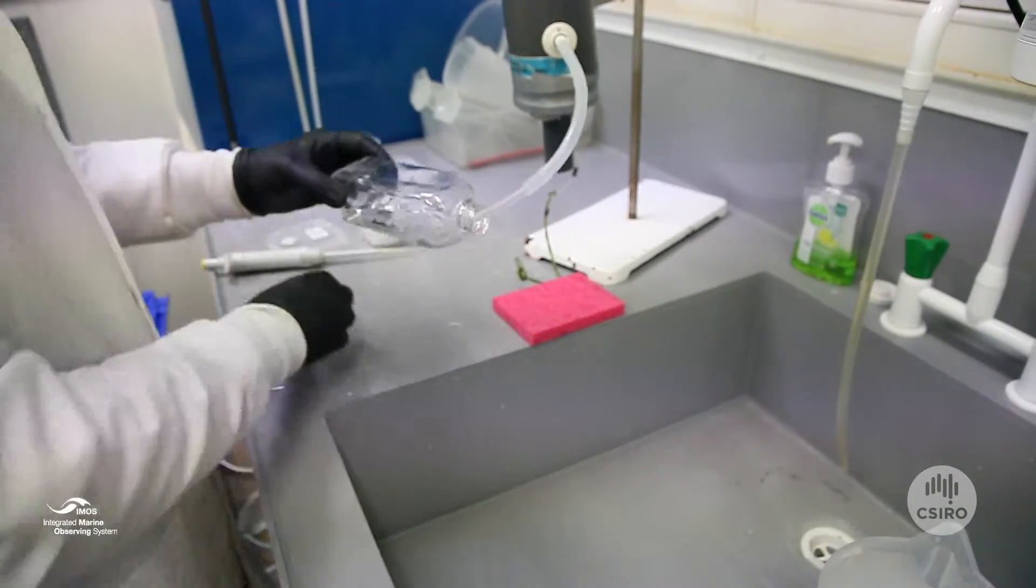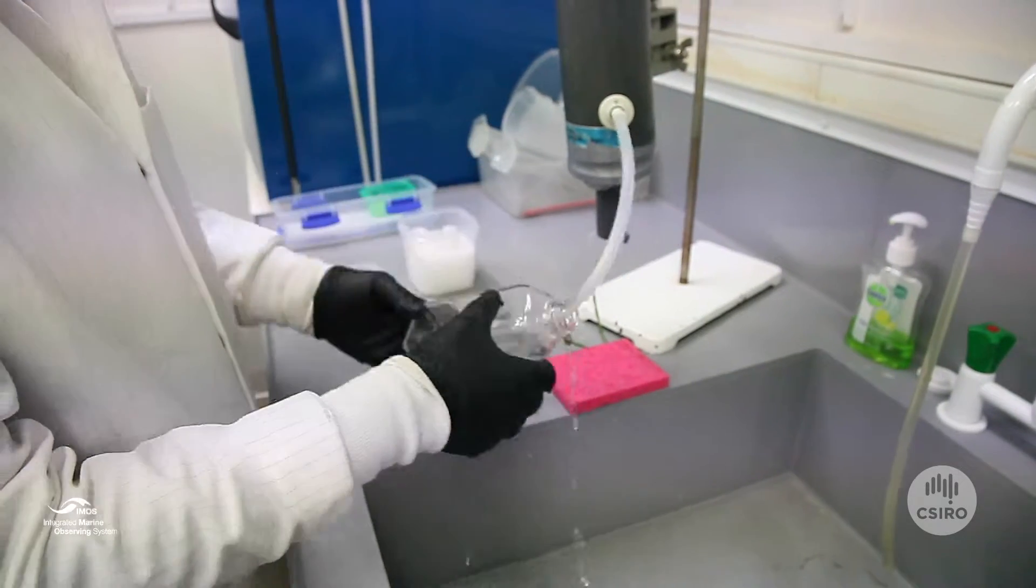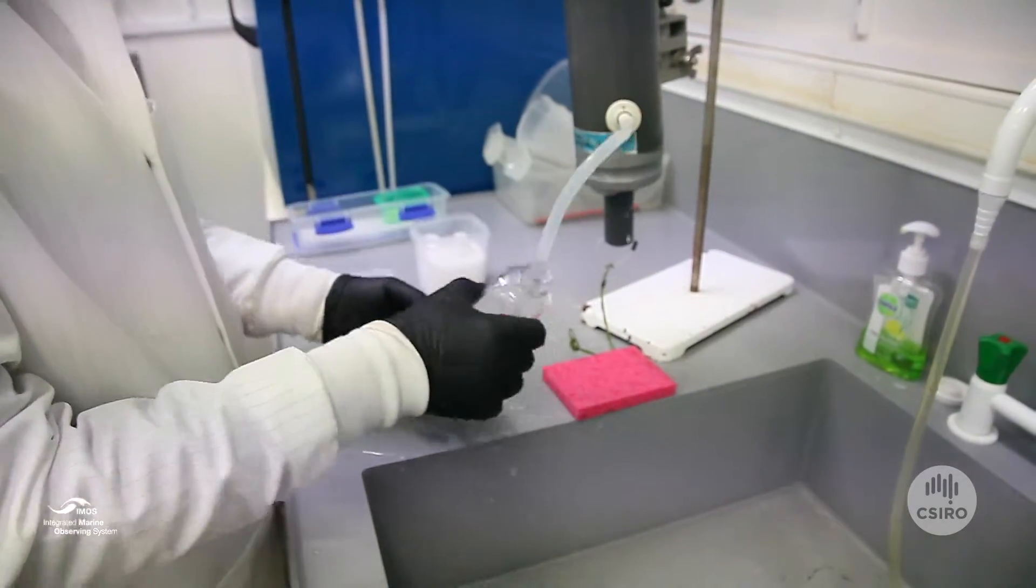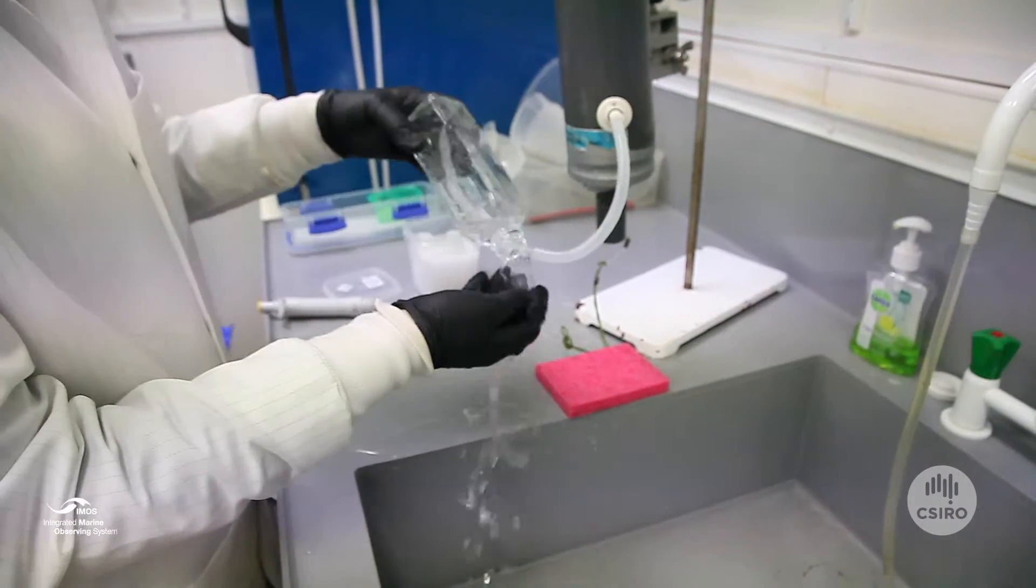Put the tube in the bottom of the square bottle and rinse the bottle three times, keeping the tip of the tube at the bottom of the bottle. Once, twice, and three times, rinsing through the lid.